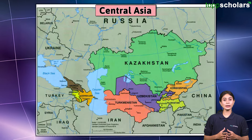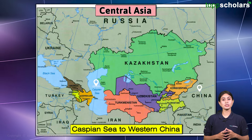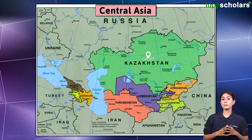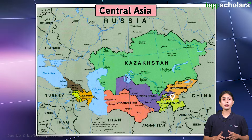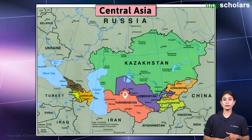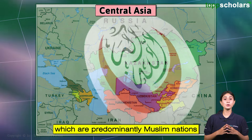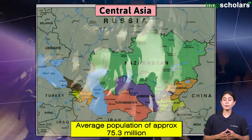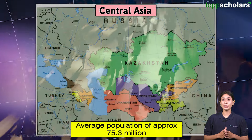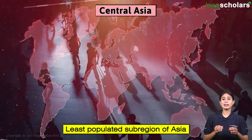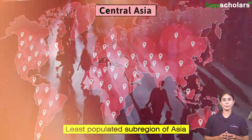Next are the countries located in Central Asia. It includes areas from the Caspian Sea to Western China, comprising Kazakhstan, Kyrgyzstan, Tajikistan, Turkmenistan, and Uzbekistan, which are predominantly Muslim nations. With an average population of approximately 75.3 million, it is the least populated sub-region of Asia.